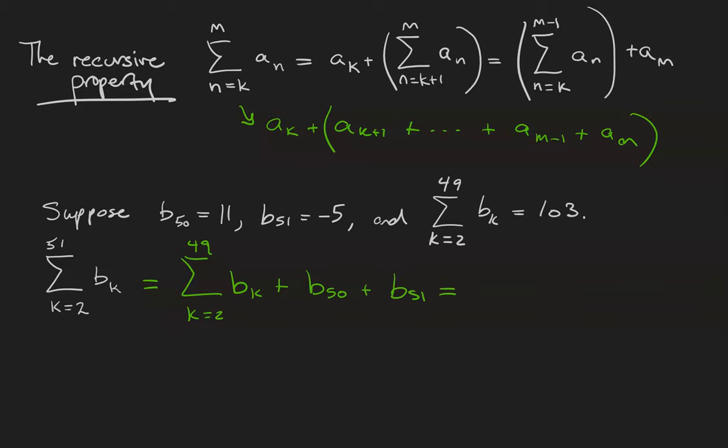Now I substitute in the known values. The sum of the b_k's is 103, b_50 is 11, and b_51 is negative 5. So the sum, in the end, turns out to be 109.